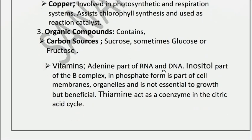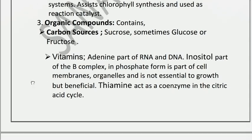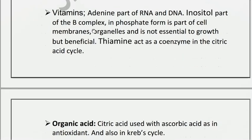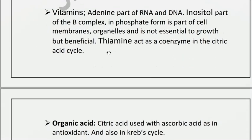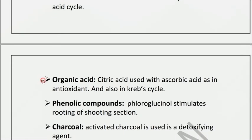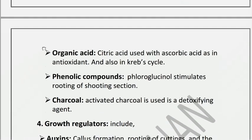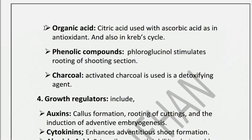Vitamins are also included as organic compounds. Thiamine is involved in the Krebs acid cycle (oxalate cycle). Organic acids such as citric acid and ascorbic acid are used as anti-oxidants and are utilized in the Krebs cycle.